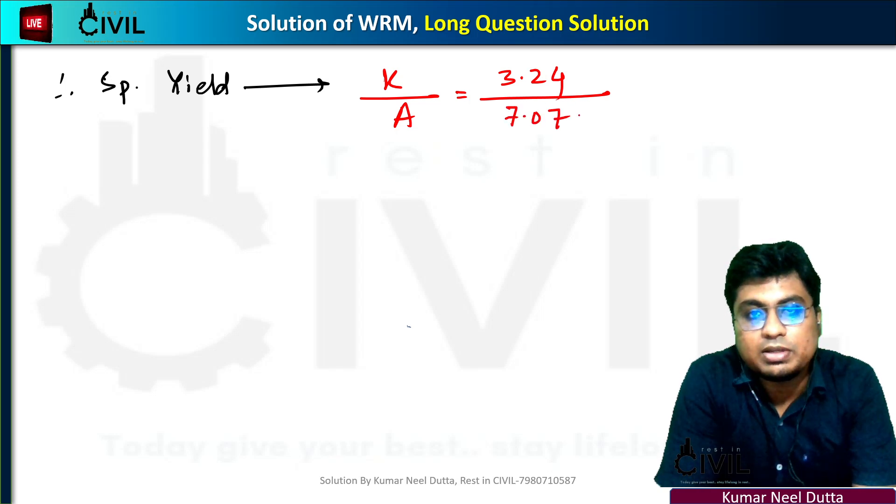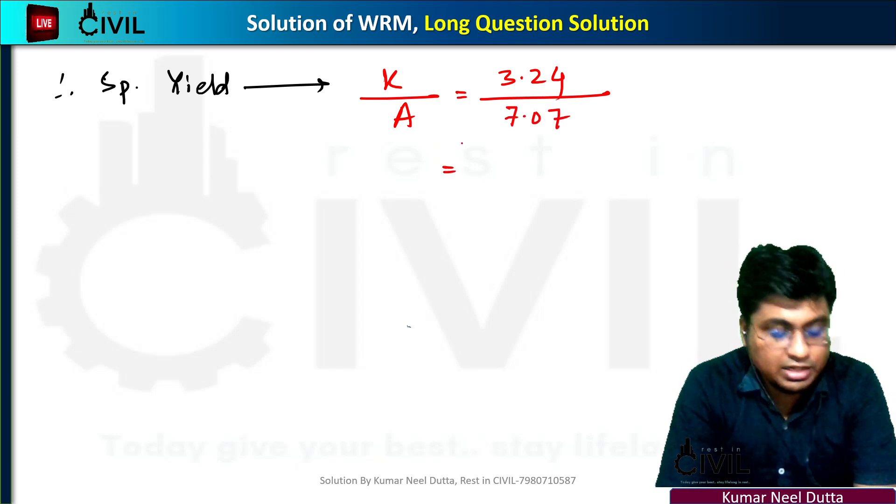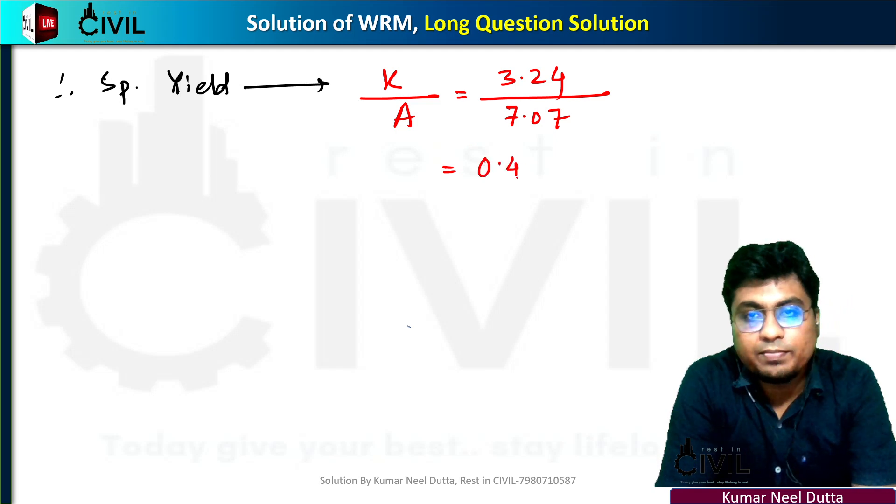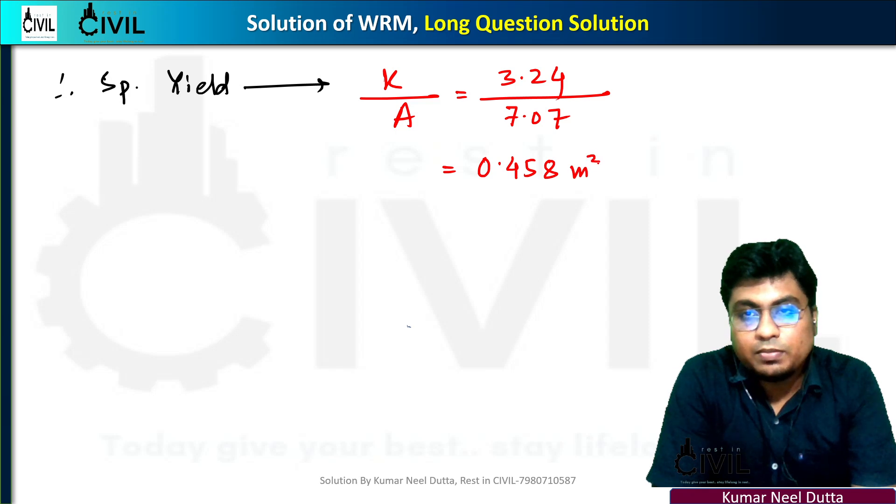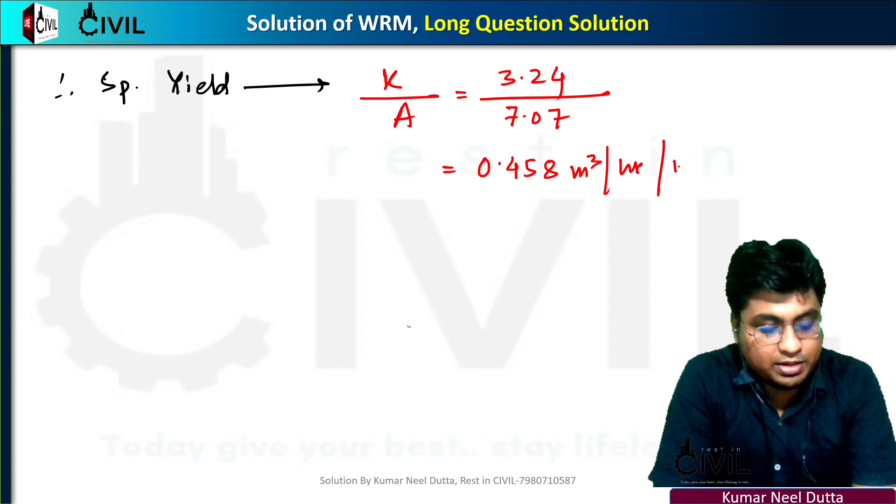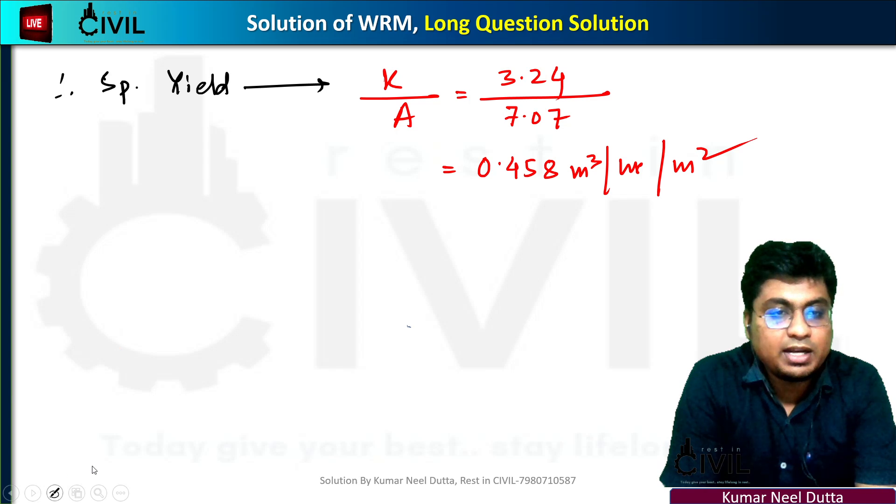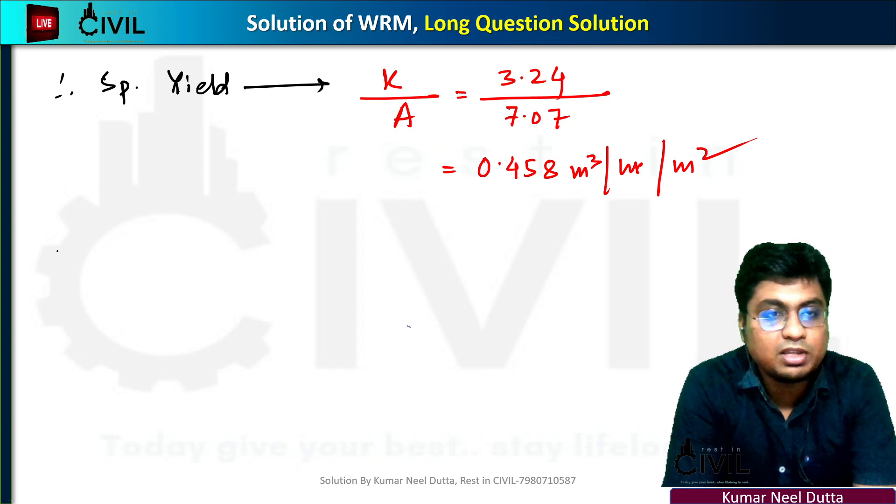This gives us 0.458 cubic meters per hour per square meter.